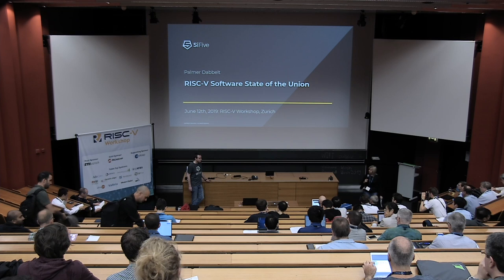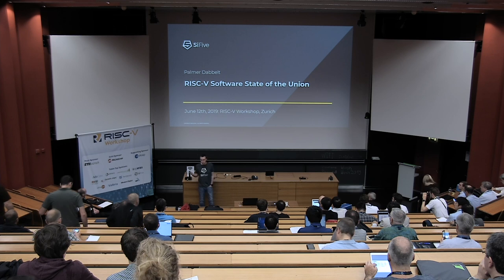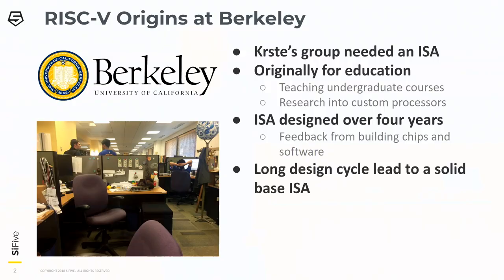I'm here to talk about software. I do a bunch of software stuff in RISC-V and I've been doing it for a few years now. RISC-V started from Berkeley — Krste's research group needed an ISA. It was originally designed for education and research: teaching undergrad classes and doing graduate-level computer architecture research where we were designing chips.